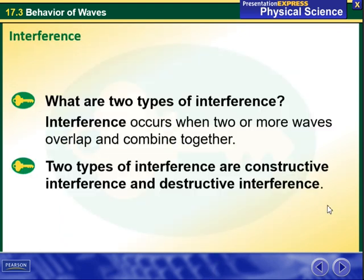Then we have another behavior of waves, which is interference. So what are two types of interference? Interference occurs when two or more waves overlap and combine together. There are two types of interference which are constructive interference and destructive interference.